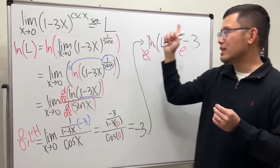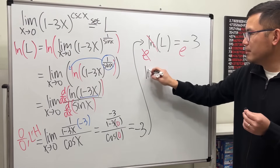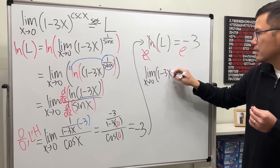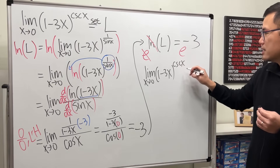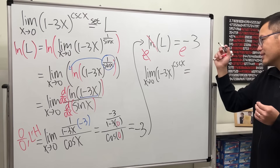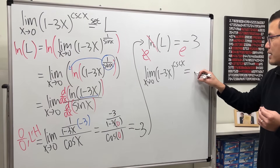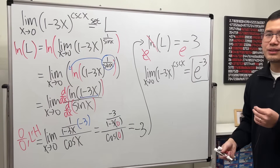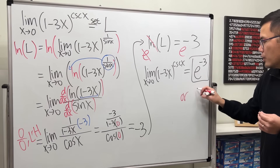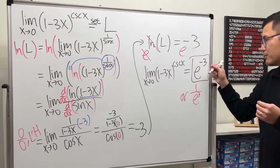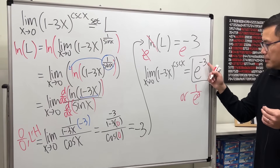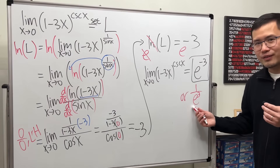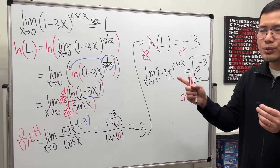Therefore, the limit as x approaching 0 of (1 minus 3x)^(cosecant x) equals e to the negative 3. You can also write this as 1 over e to the third power by moving the negative exponent to the denominator. Hopefully this is helpful — check out my other tutorials on limits.